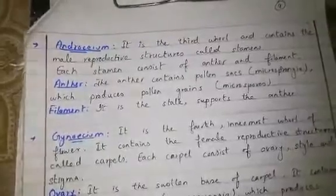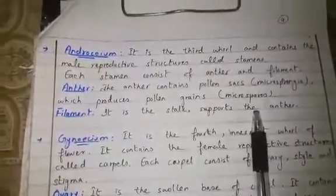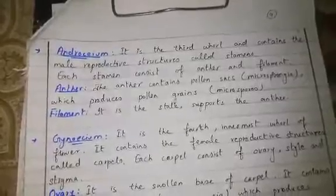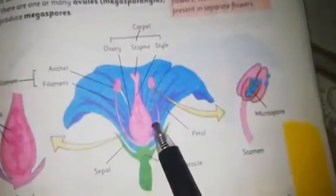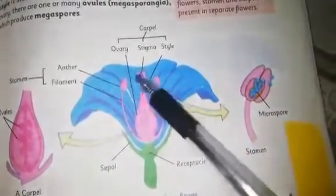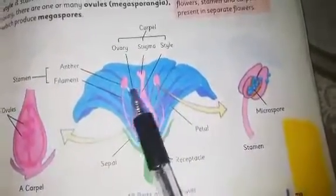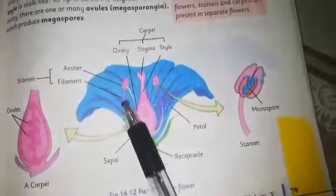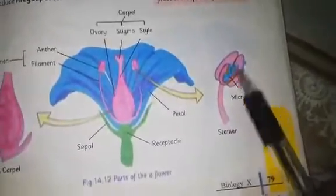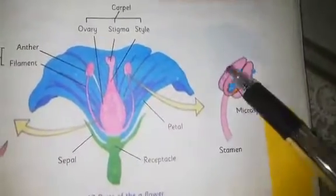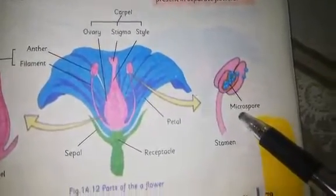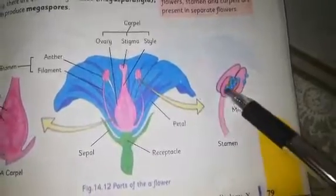The anther is the anterosium part containing pollen sacs called microsporangia, which produce pollen grains called microspores. The filament is the stalk of the stamen. Here you can see the details: this is the inside part of the anther, and these are the microspores or pollen grains, with the filament as the stalk.